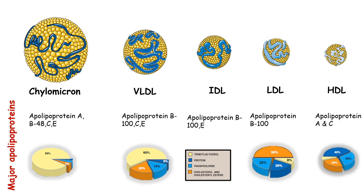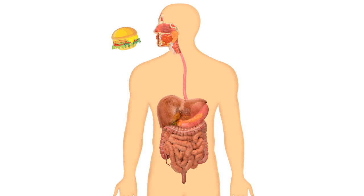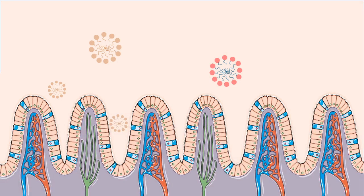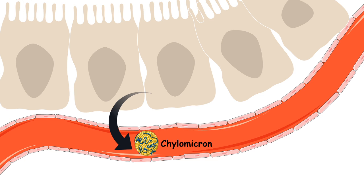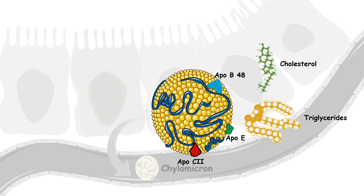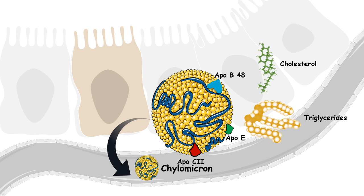Now let's see how these particles are synthesized, what their functions are, how they are metabolized, and what their turnover rate is. Let's say we eat food enriched in fats, such as a cheeseburger. It would be metabolized inside our GI tract — in the intestine the fat would be absorbed in the form of micelles. The substance secreted from the intestinal epithelial cell is the chylomicron.